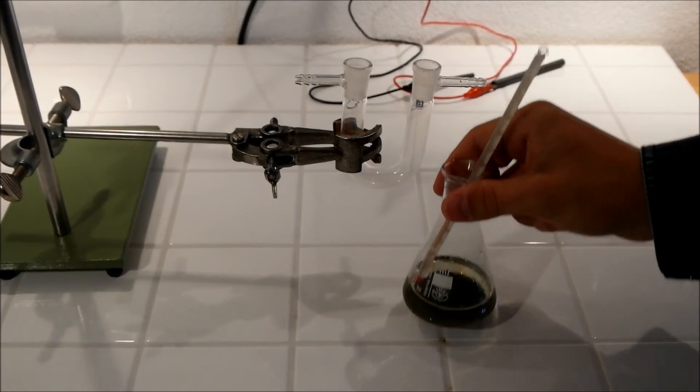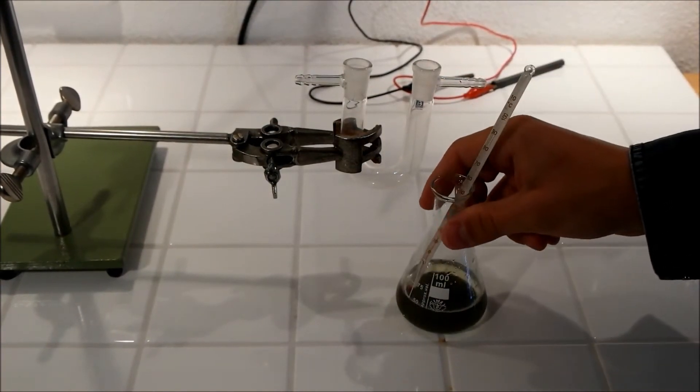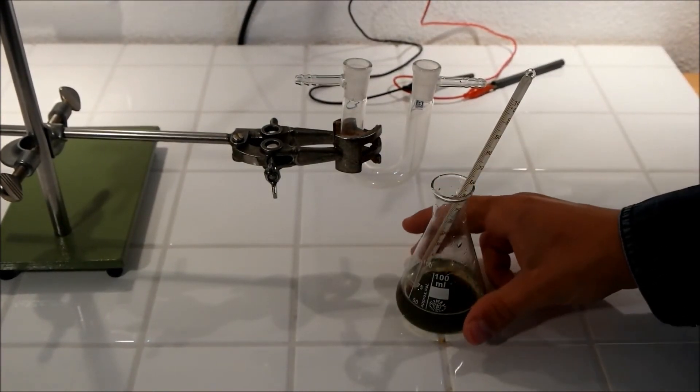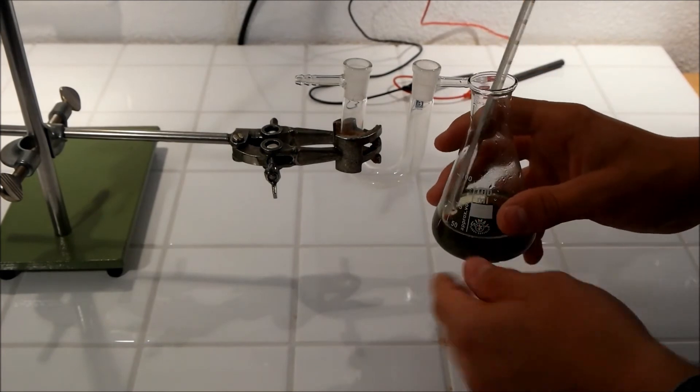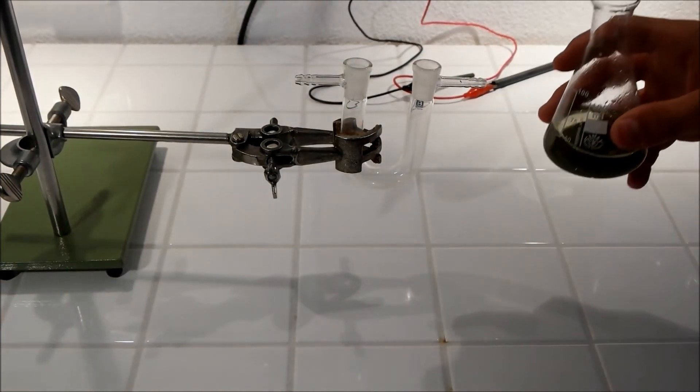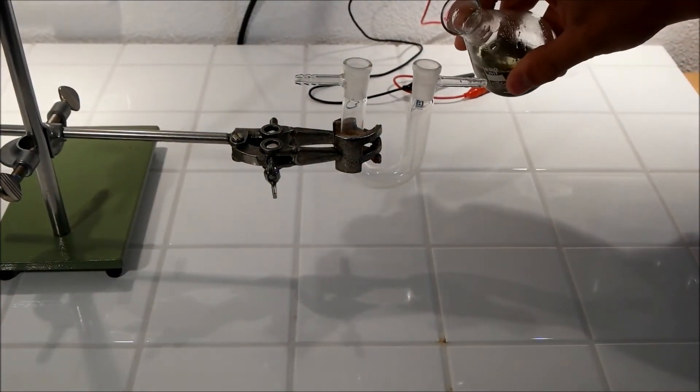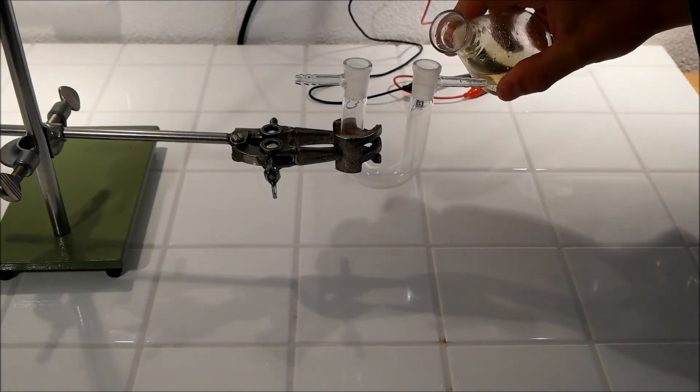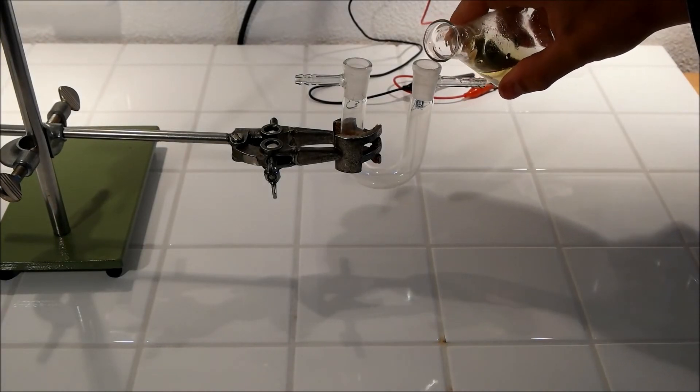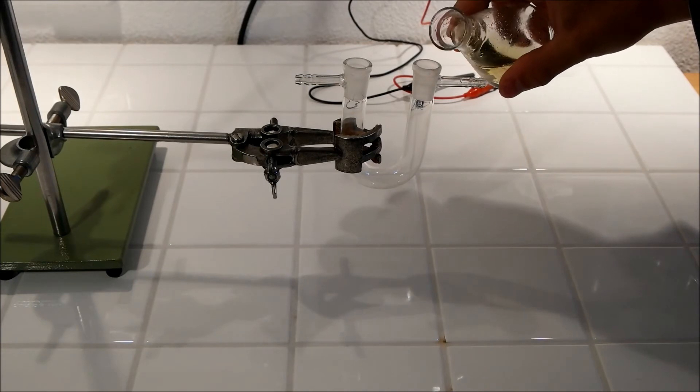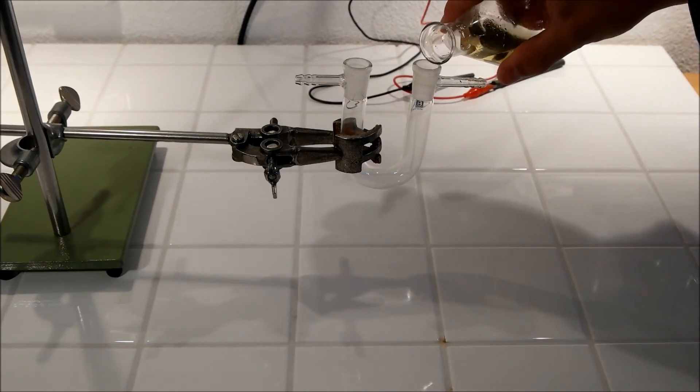If you want, you can filter the solution but I think it's unnecessary. We can keep the zinc powder in the Erlenmeyer flask by just pouring the solution gently into our u-shaped tube. Just wait a bit so that the zinc powder settles to the bottom.